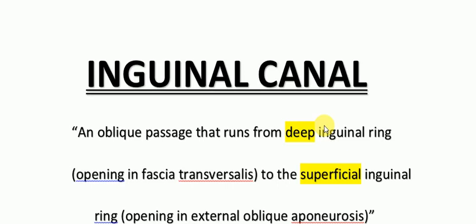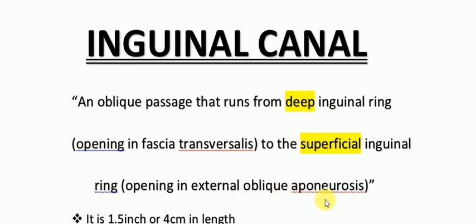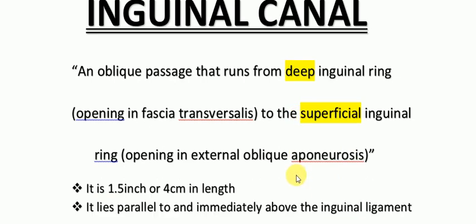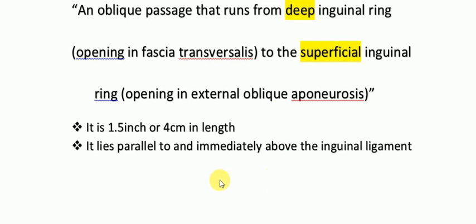The inguinal canal is an oblique passage that comes from the deep inguinal ring, which is an opening in the fascia transversalis, to the superficial inguinal ring, which is an opening in the external oblique aponeurosis. It runs medially downward and is 1.5 inches or 4 centimeters in length. It lies parallel to and immediately above the inguinal ligament. I will show you in the image as well.